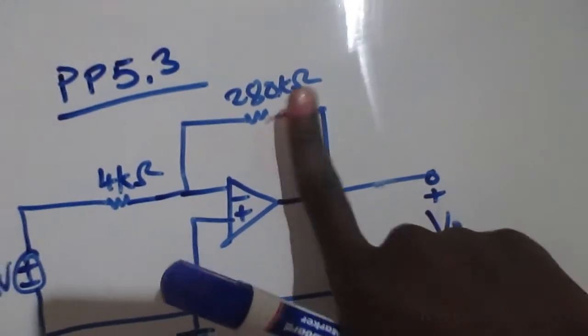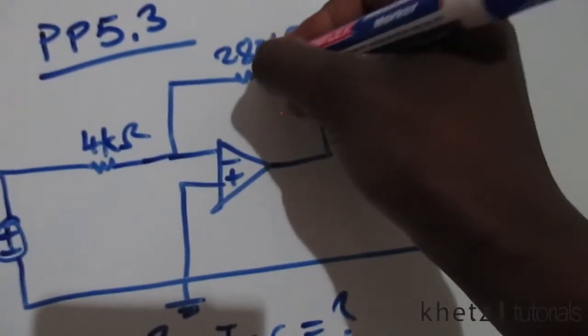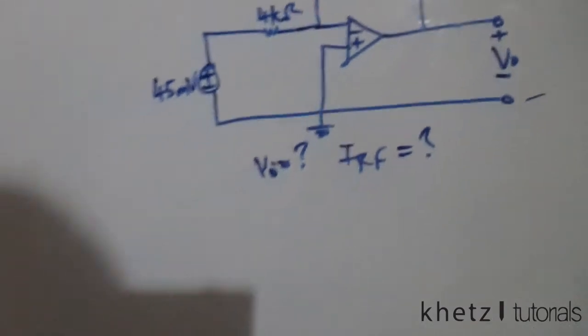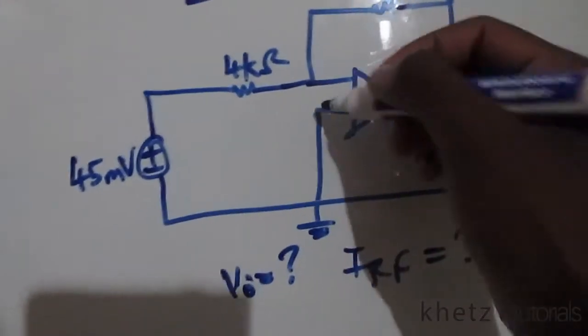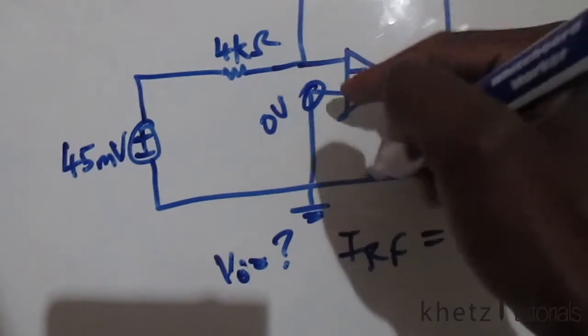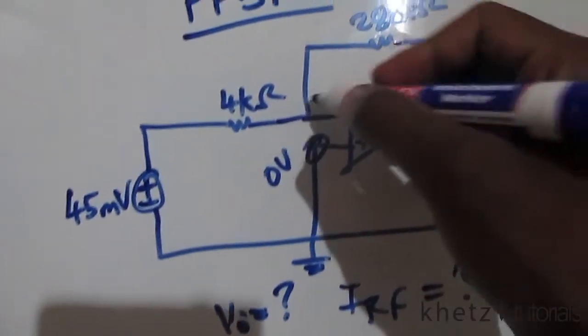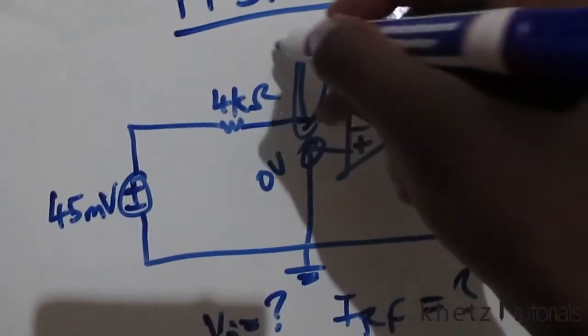The resistor value is 280 kilo ohms. Now we have zero volts here because we only have this wire connected to ground, which means that the other terminal will also have zero volts.